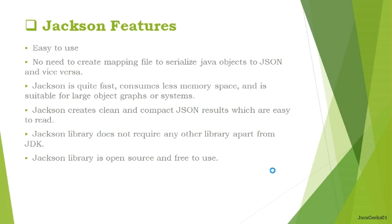Jackson is very fast compared to other libraries and consumes less memory space. It is suitable for large object graphs or systems — when you read a large JSON file it is all loaded into memory, and Jackson considers all these factors and uses less memory, so your RAM utilization goes down. Jackson uses an object graph, meaning there is a tree-based structure, similar to the DOM parser for XML. Jackson also creates clean and compact JSON results which are easy to read.